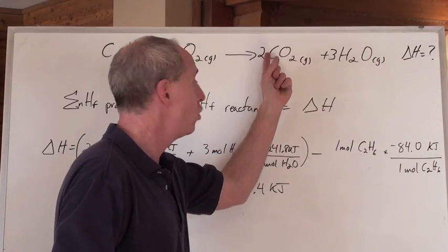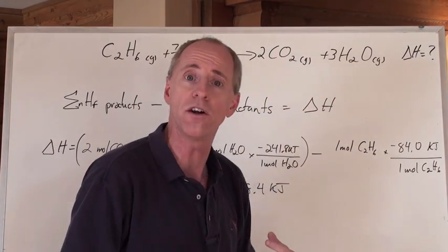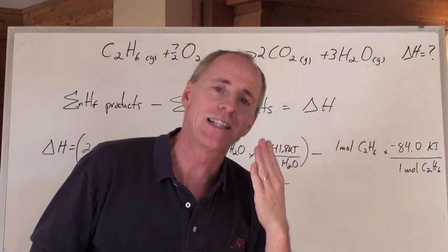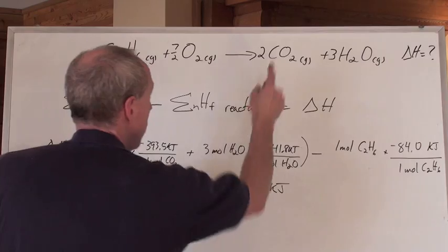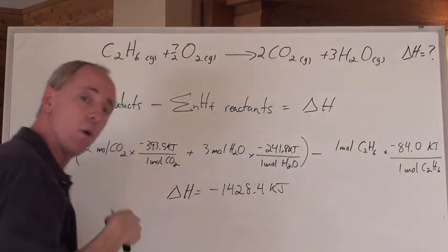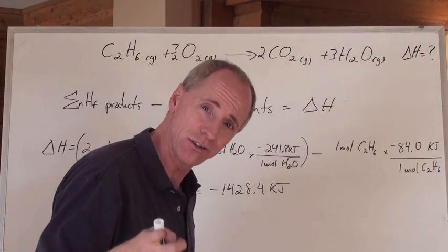That's true, but it's also the amount of heat that's released when seven-halves of that reacts, or when two moles of that form or three moles of the water form. So, the delta H is always written just in kilojoules. It's not per mole, it's per whatever you're talking about in the equation.